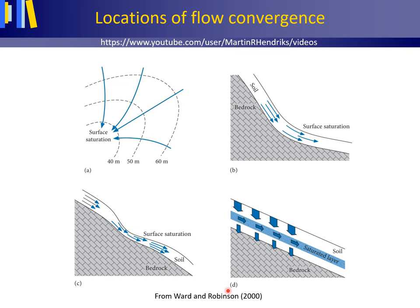A perched water table and throughflow may also develop as the result of a reducing hydraulic gradient as water moves downward through the soil, even a relatively uniform one. This may cause the development of a saturated layer at some depth in the soil profile, as shown under D.